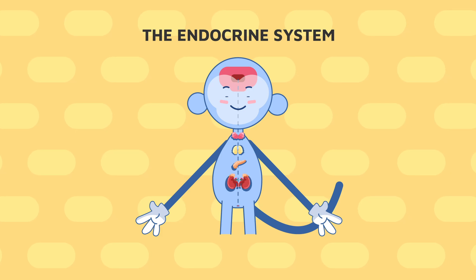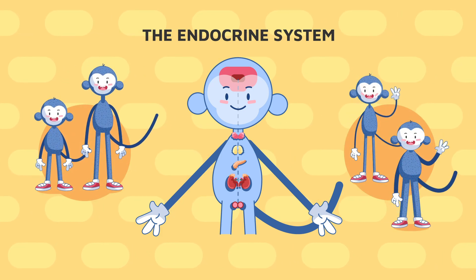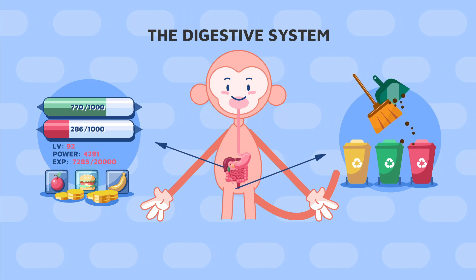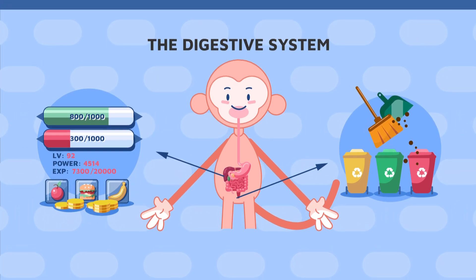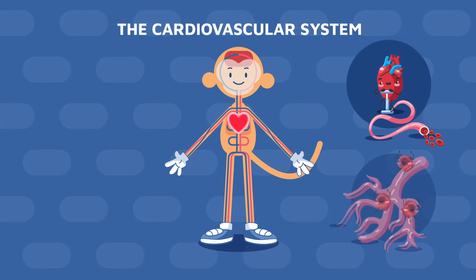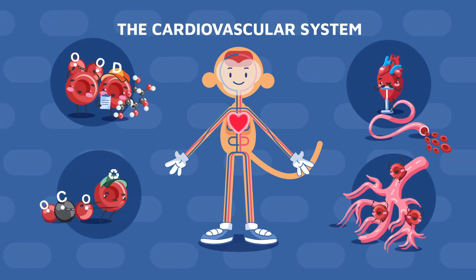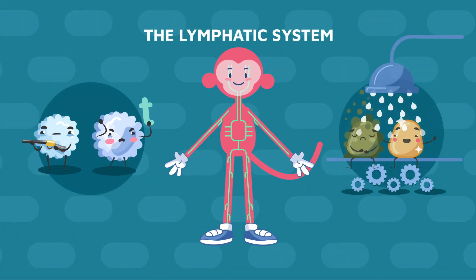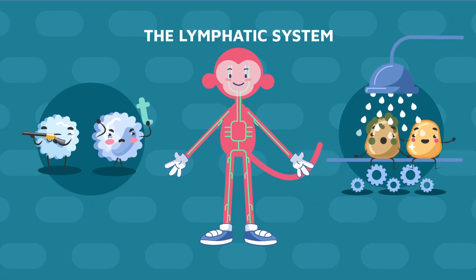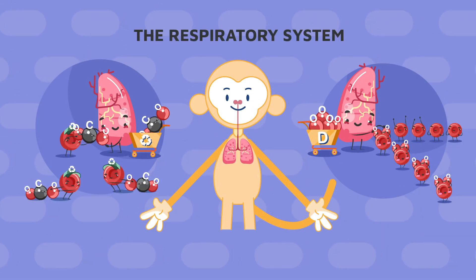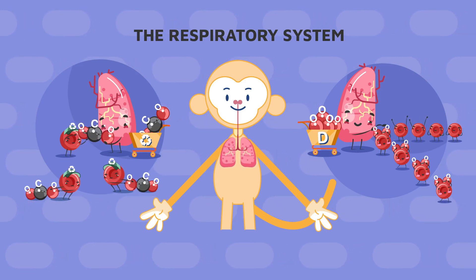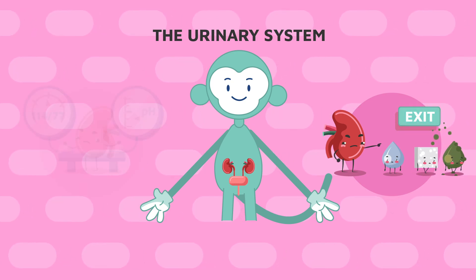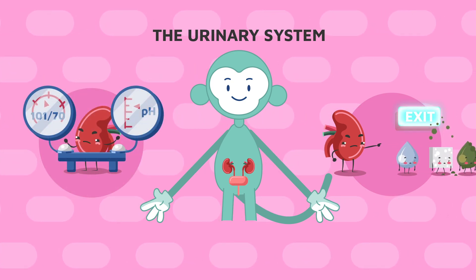The endocrine system directs long-term changes in the operation of an organism. The digestive system turns food into nutrients and excretes the waste. The cardiovascular system distributes nutrients, wastes, and gases to and from the cells. The lymphatic system defends our organism against infection. The respiratory system saturates our blood with oxygen. The urinary system eliminates excess water, wastes, and salts, and controls pH and blood pressure.